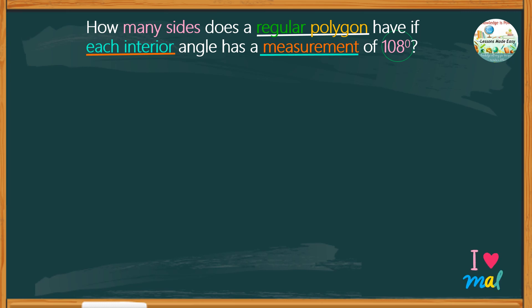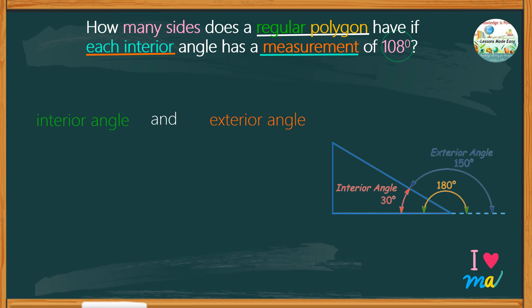Do you know that when you put together an interior angle and an exterior angle, we can get a total measurement of 180 degrees? These two angles together make up what we call supplementary angles.